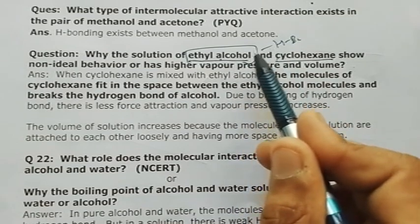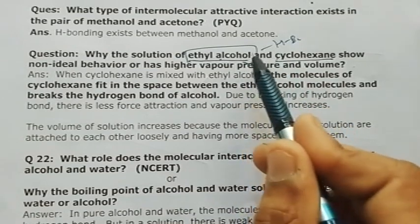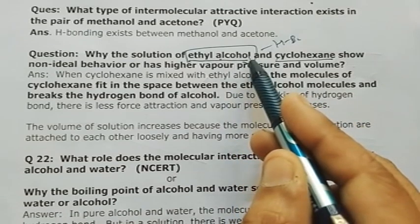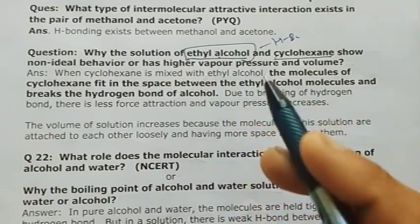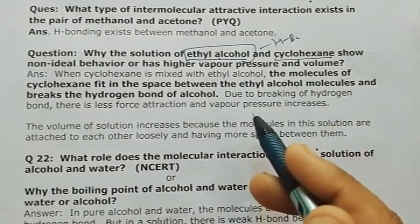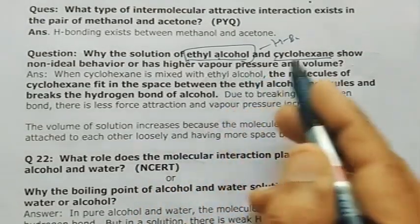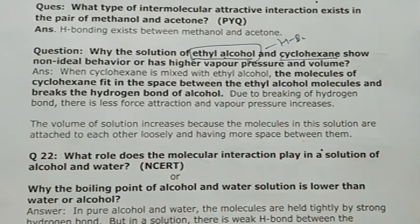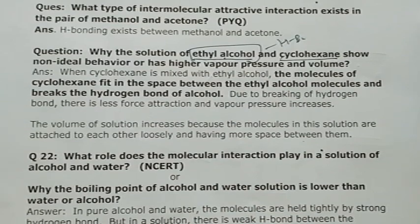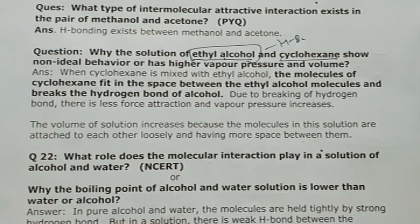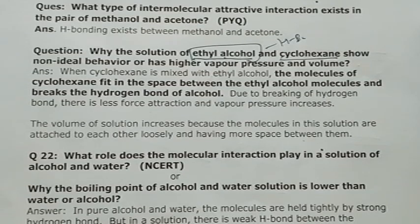When cyclohexane is mixed with ethyl alcohol, it breaks the H-bonds of ethyl alcohol. Due to this H-bond breaking, only weak forces remain, so the solution shows positive deviation. Ethyl alcohol and cyclohexane solution shows positive deviation due to the breaking of H-bonds between ethanol molecules.